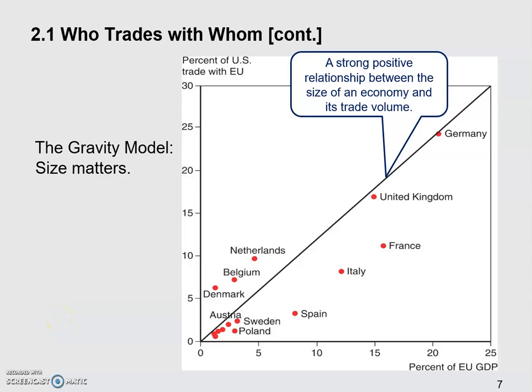In the previous video, we looked at the first piece of empirical evidence and found that the size of an economy has very strong predicting power when it comes to trade volume. We looked at this group of EU economies, how big they are in the EU, and how much they trade with the US as a share of the total US and EU trade. We found this upward straight line estimated with just the size of these economies. This tells us there's a very strong positive relationship between the size of these economies and their trade volume.